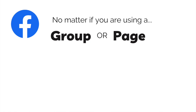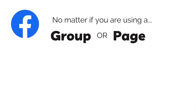Now that we know the difference between a Facebook page and a Facebook group, the second thing you need to know is probably the most important. If you're going to use a Facebook group for your classroom, or the school is going to use a Facebook page representing the school, either way, you must have written permission from each student — specifically from their parent or guardian. We need permission to share their name, pictures, or any other information. This is an absolute must, whether it is a private group for a classroom or a public page that the school runs. This is commonly done in the form of a picture release form that includes information about how their child's information and picture could be used on social media.